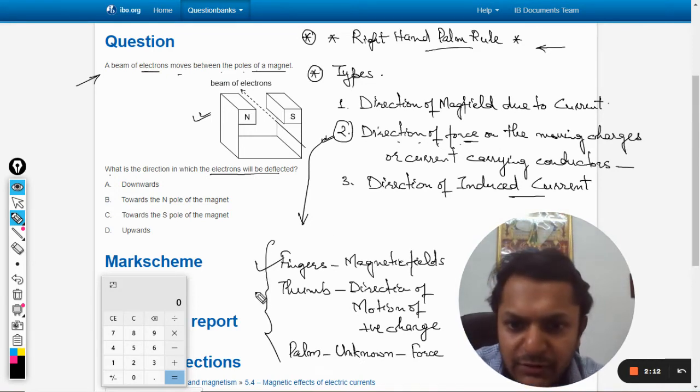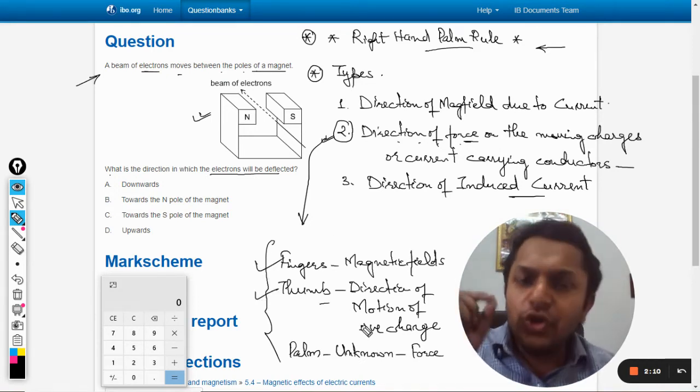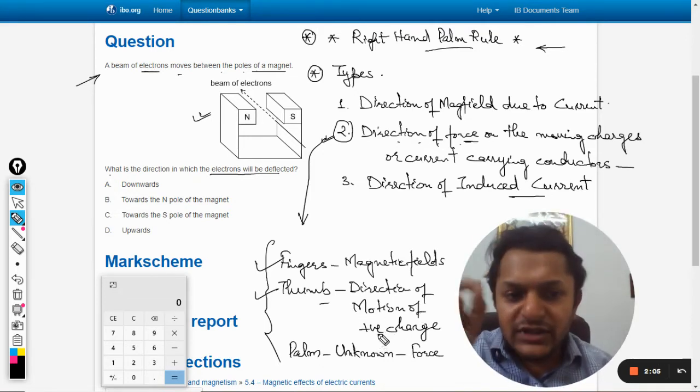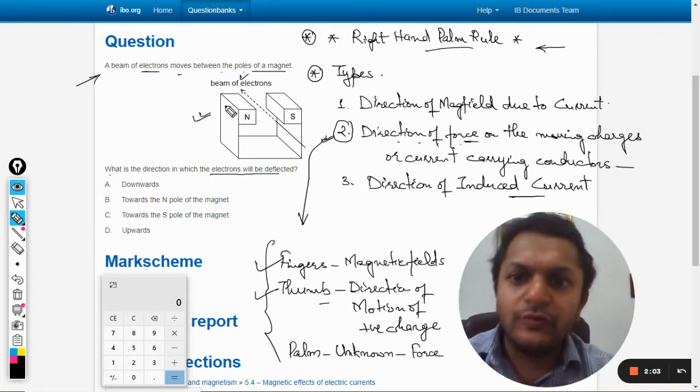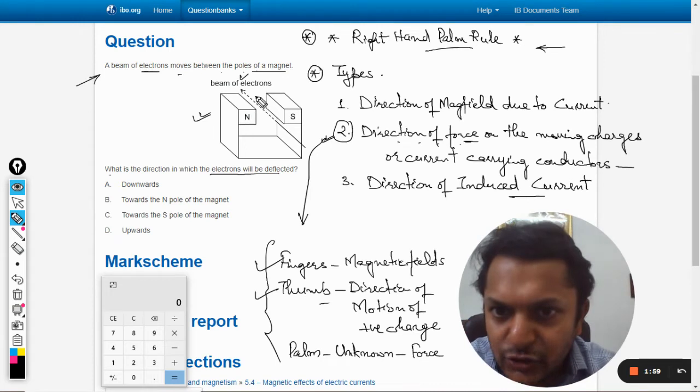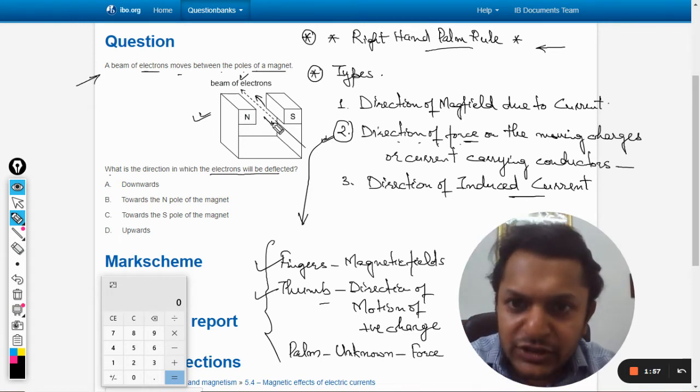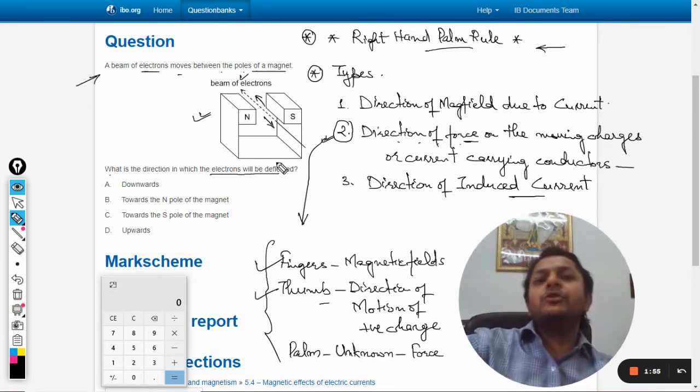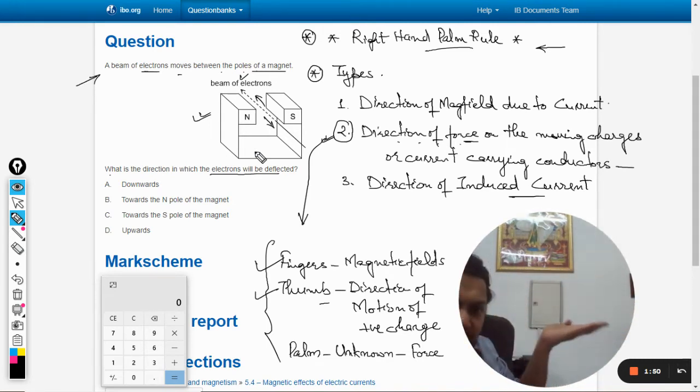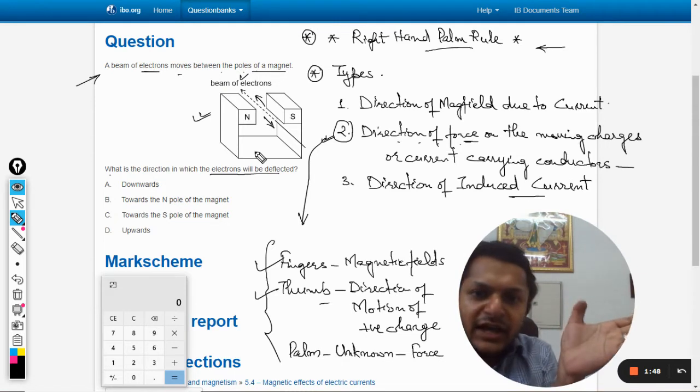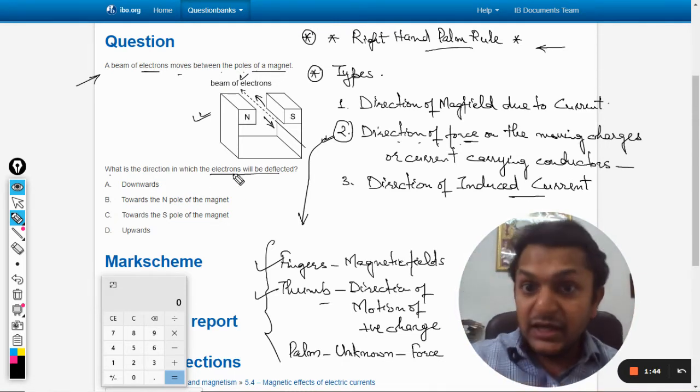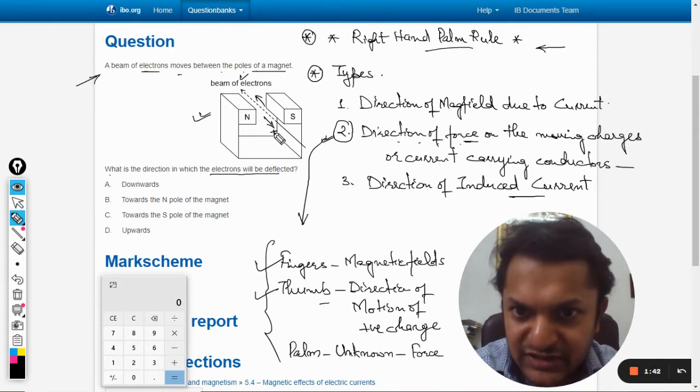And what about the thumb? Thumb will show the direction of the motion of the positive charge. But now in this case they are using electron which is negatively charged, so electron is going into that side but positive charge will be assumed in the opposite side. So in this rule I am pointing my fingers towards right and my thumb is pointing out of the book, pointing towards me, because the positive charge is coming out of the book.